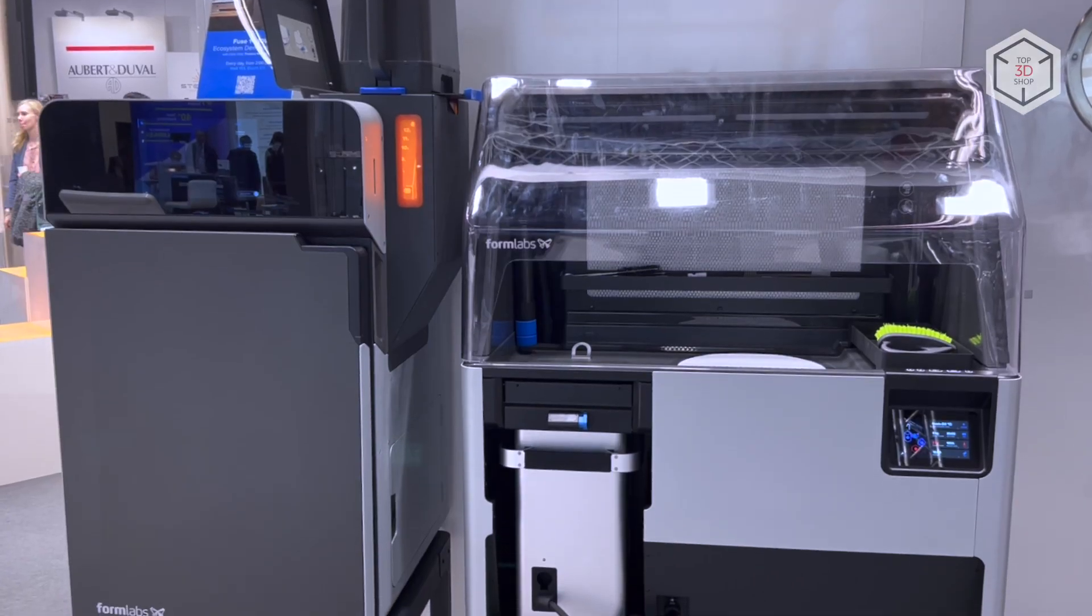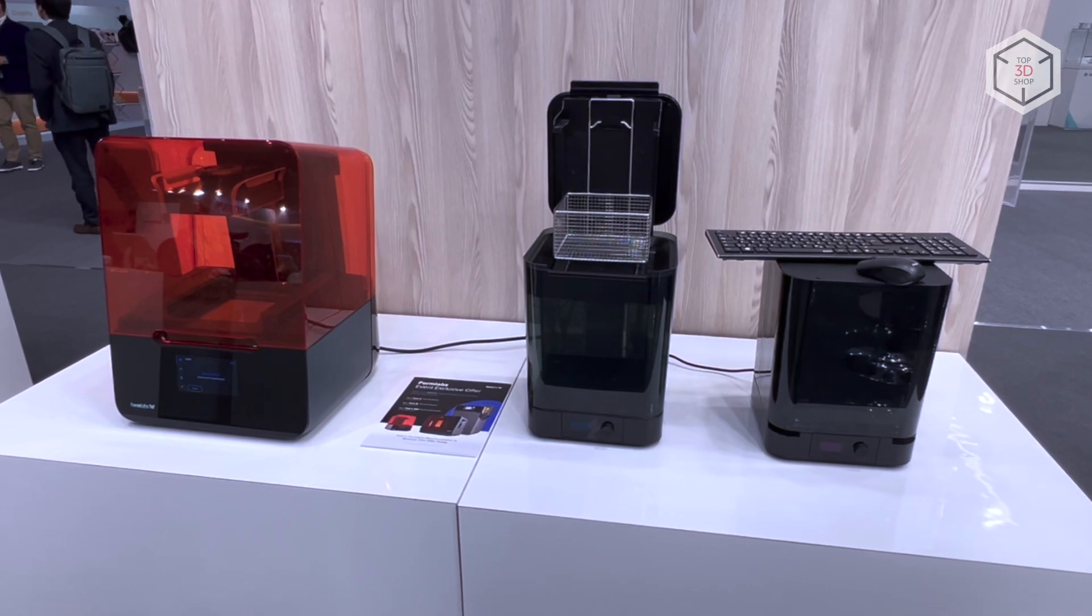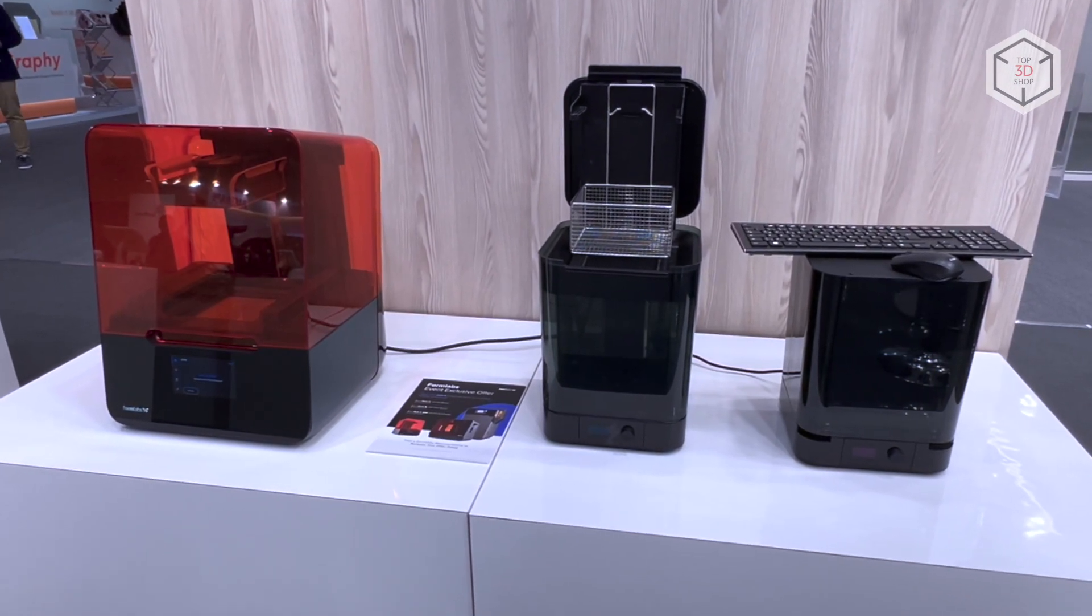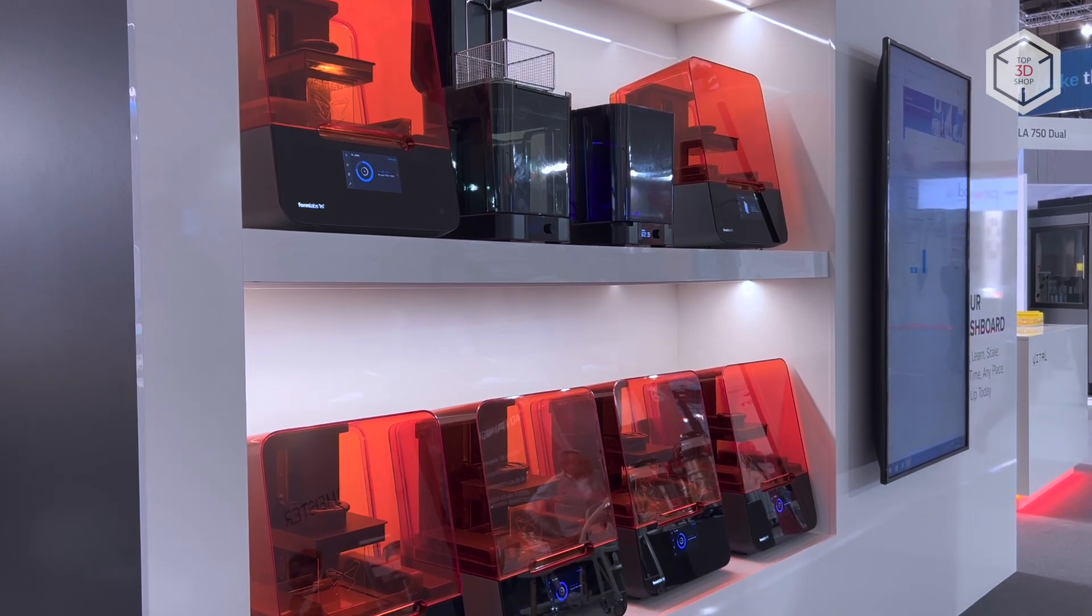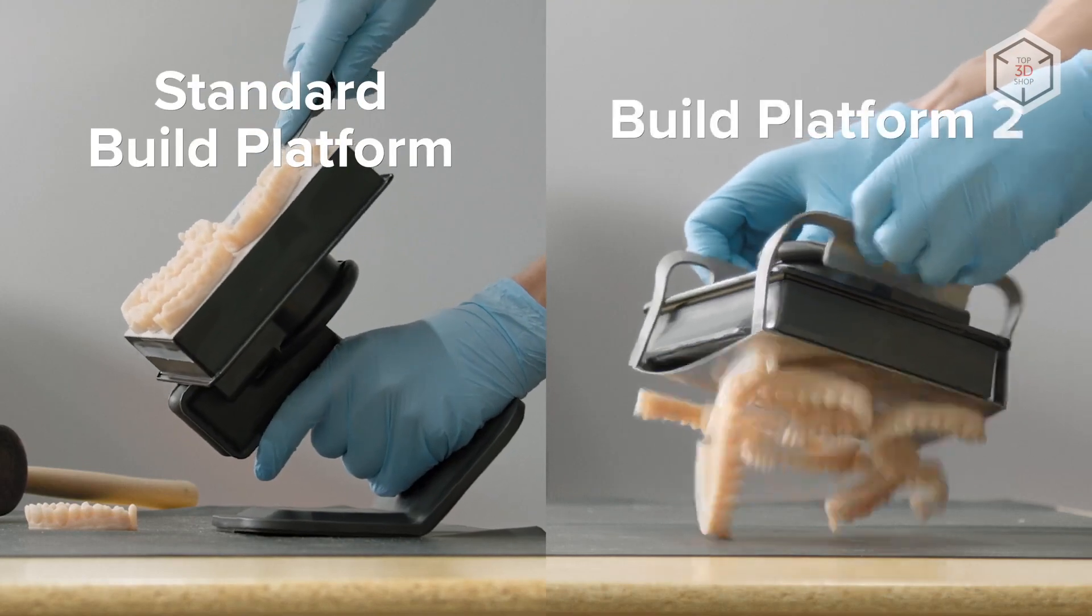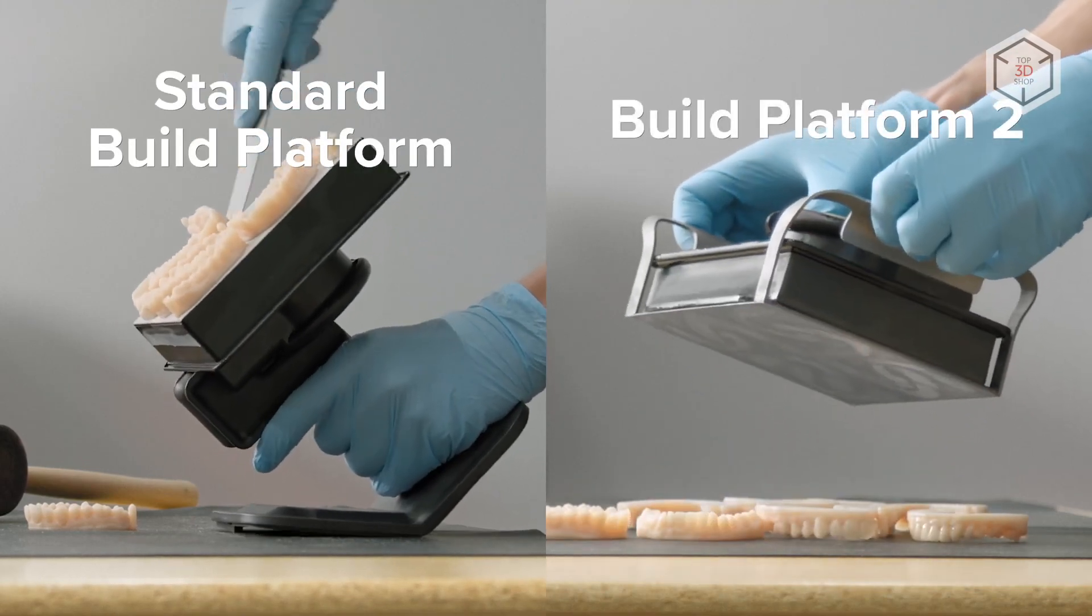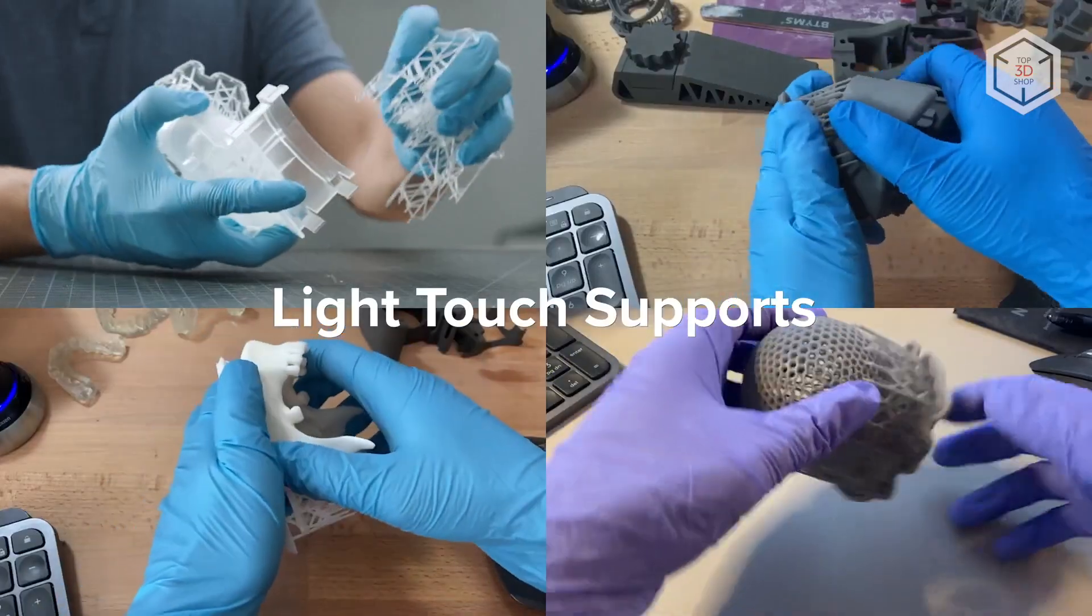The basic model in the current line of SLA printers named Form 3 Plus is a professional laser 3D printer using the technology of low-force stereolithography, or LFS. One of the advantages of LFS is the small contact area between the supports and the model. The easy removal of such supports speeds up the post-processing stage.